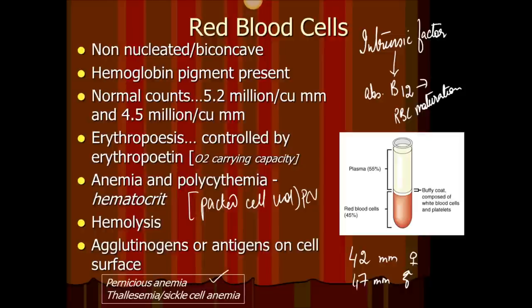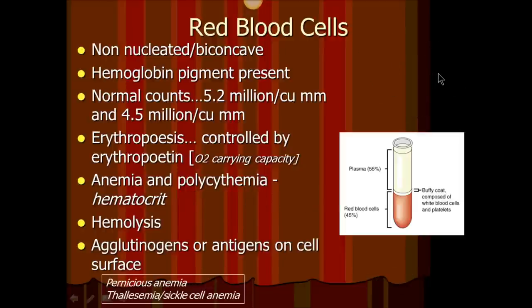Another type of anemia is where the hemoglobin molecule is abnormal in shape, so it cannot do its job. Two such conditions are thalassemia and sickle cell anemia. In sickle cell anemia, the cells instead of being biconcave are sickle-shaped. They can get stuck in capillaries and cause clots — leading to strokes if it happens in the brain, or myocardial infarction if it happens in the coronary blood vessels. So sickle cell anemia can prove to be very dangerous.